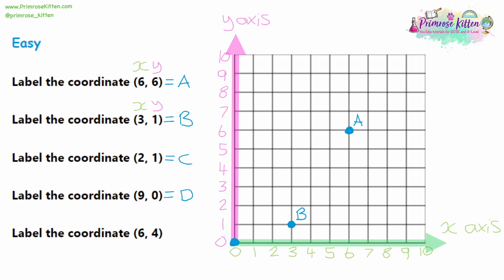For question 3, we want the coordinate (2, 1). X-axis is the first number, y-axis is the second number. A common way to remember this is 'along the corridor and up the stairs.' If you go along the corridor, you're moving along the x-axis — moving across on the same level. If you're going up the stairs, you're moving upwards on the y-axis. So along the corridor from (0, 0) two places, then one place upwards. We have a 2 below in green for the x-axis and a 1 to the left in pink for the y-axis. Let's label that C.